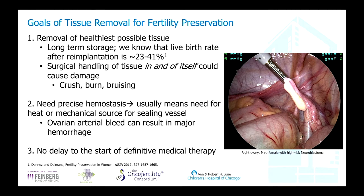We know that surgical handling of tissues in and of itself could cause damage — laparoscopic graspers particularly with teeth can crush tissue, and heat sources can cause burn injury. We know that we need precise hemostasis, usually requiring some sort of heat or mechanical source to seal a vessel. This is really important in a pediatric patient where blood volume is less and major bleeding from the ovarian artery could be life-threatening and delay medical therapy.